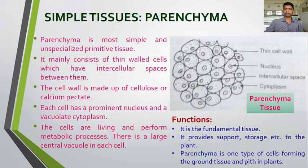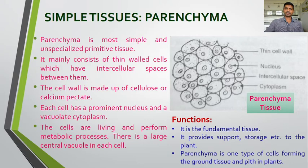The functions of parenchyma: it is the fundamental tissue. It provides support and storage to the plant. Parenchyma is one type of cell forming the ground tissue and pith in the plants. It is fundamental tissue, it provides support, it stores the food material, and it is one type of cell forming ground tissue and pith in the plants.